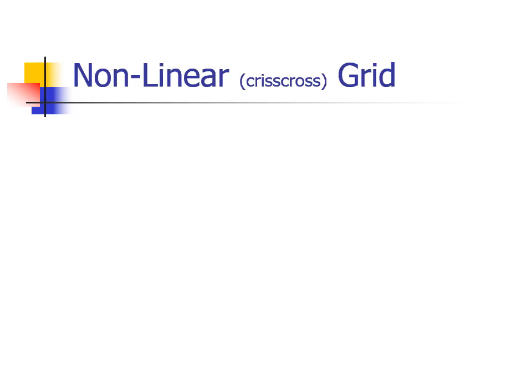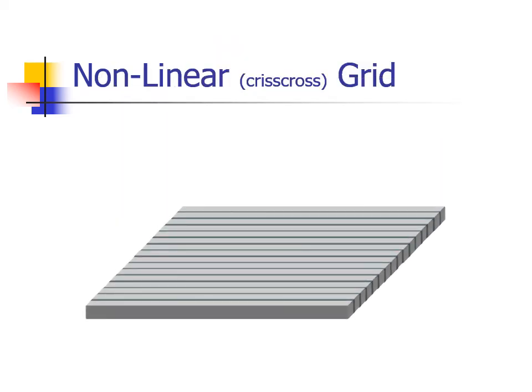The third type of grid construction is called a non-linear grid. Non-linear grids are basically two grids in a single package. For our example, let's start with a 4-to-1 grid with the strips oriented across the slide.